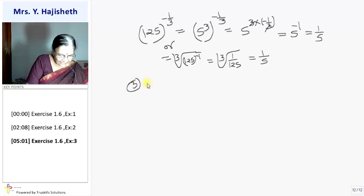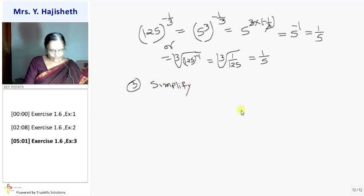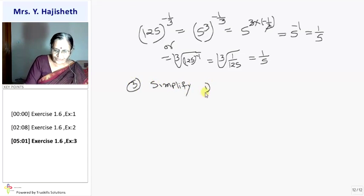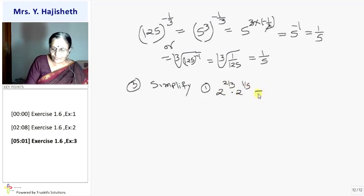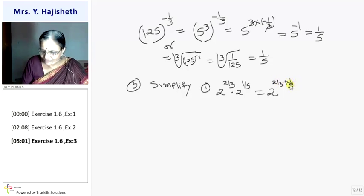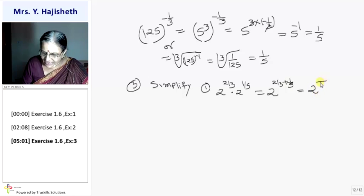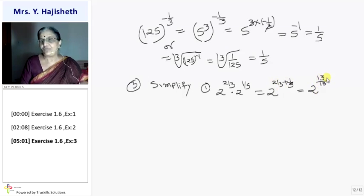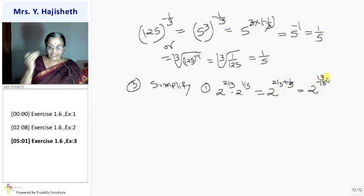Third sum is 'simplify', applying the laws of indices. First: 2 raised to 2 by 3 into 2 raised to 1 by 5. Using the first law — a raised to m into a raised to n — we add the exponents. The LCM is 15, so it is 2 raised to 10 plus 3 by 15, which is 2 raised to 13 by 15.